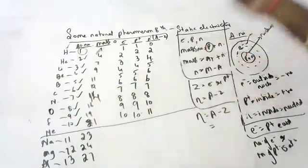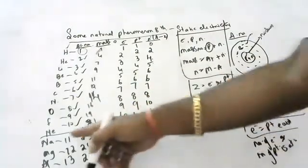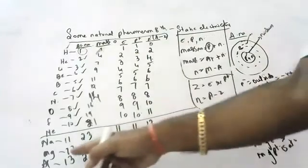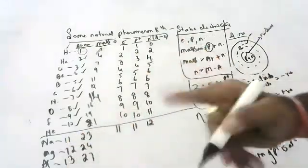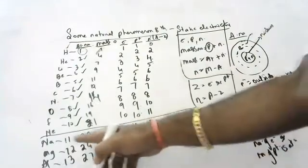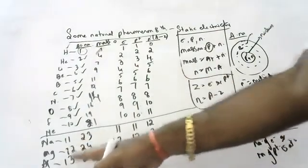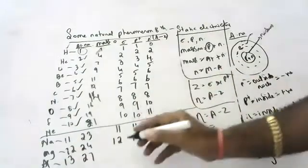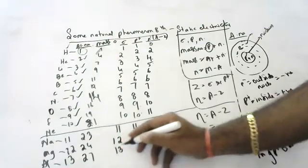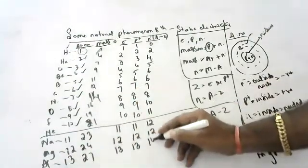Sodium has 11 electrons, 11 protons, and 12 neutrons. Magnesium has 12 electrons, 12 protons, and 12 neutrons. Aluminum has 13 electrons, 13 protons, and 14 neutrons.